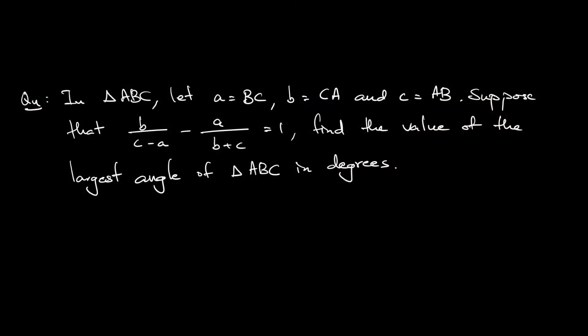Let's read this geometry question together. In triangle ABC, let a be the side BC, b be the side CA, and c be the side AB as typical. The question supports that b/(c-a) - a/(b+c) = 1. So this is the constraint given by the question.